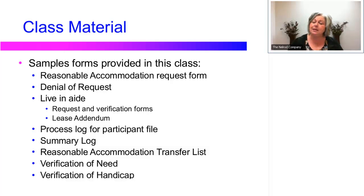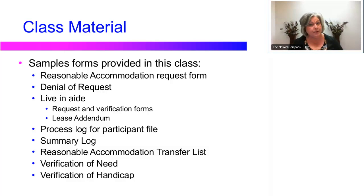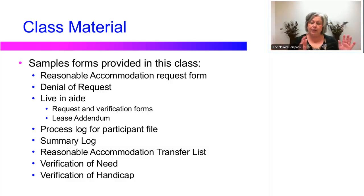There's a process log for the participant file, where you will track from the beginning initiation of that request all the way through the grievance process if one is involved. Then there's a summary log, where you'll record all of the reasonable accommodation requests for each property and for the PHA as a whole.